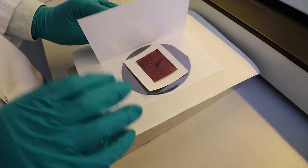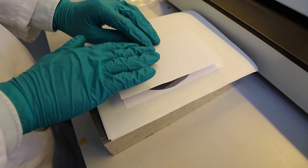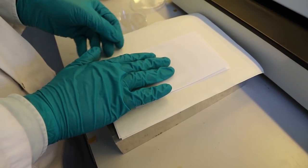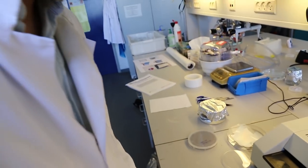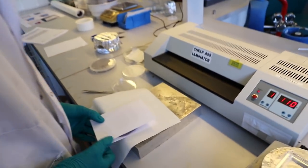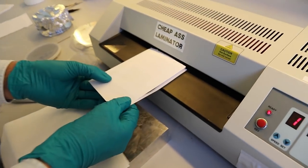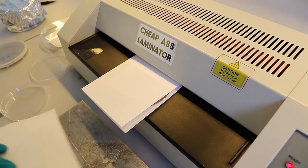Then we enclose it in an A4 sheet of paper because we want to prevent the foil from sticking to the silicon rubber of the laminator. Just stick it through our laminator.